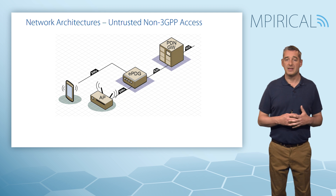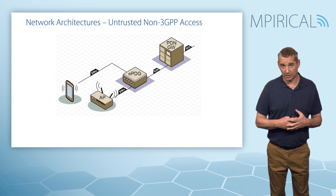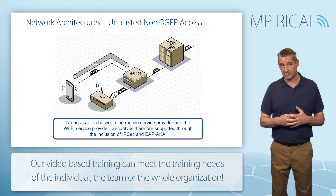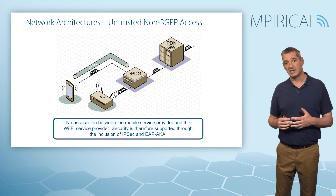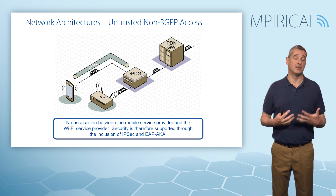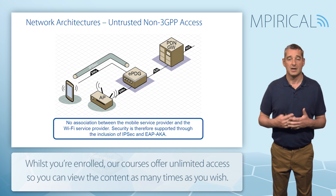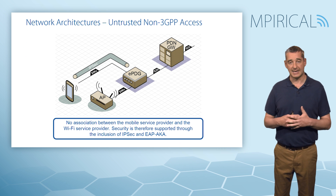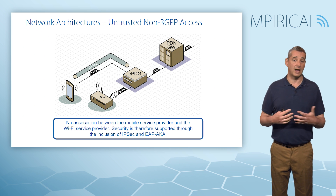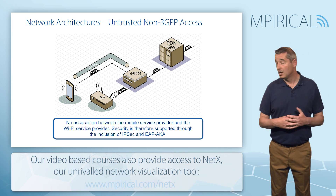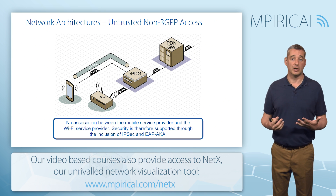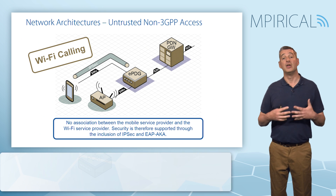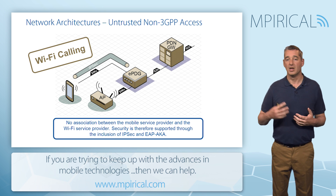The second method — and possibly the more common — is the untrusted non-3GPP access model. Here we assume there is no relationship or association between our Wi-Fi service provider and the mobile service provider. As such, it's necessary to carry out additional security procedures before permitting the mobile to register and start making calls. This is achieved by setting up an IPSec tunnel between the mobile and the EPDG, which supports encryption and integrity protection. We also carry out subscriber authentication using a process termed EAP-AKA. This is more common for Wi-Fi calling because it allows subscribers to make calls from coffee shops, hotels, or at home.